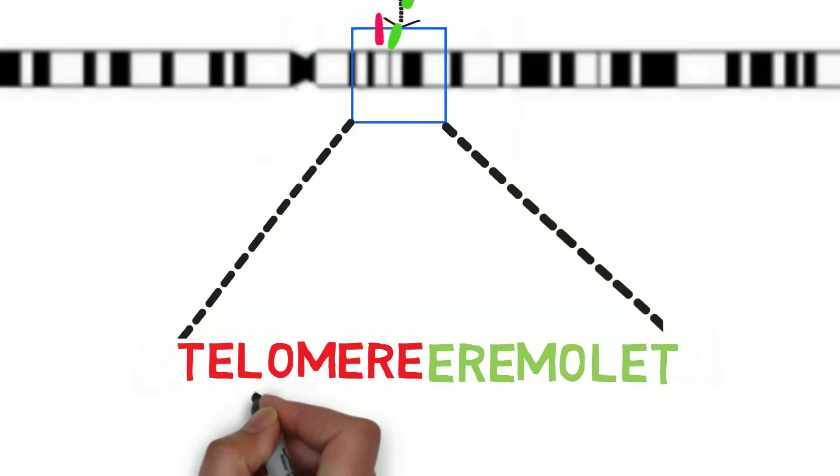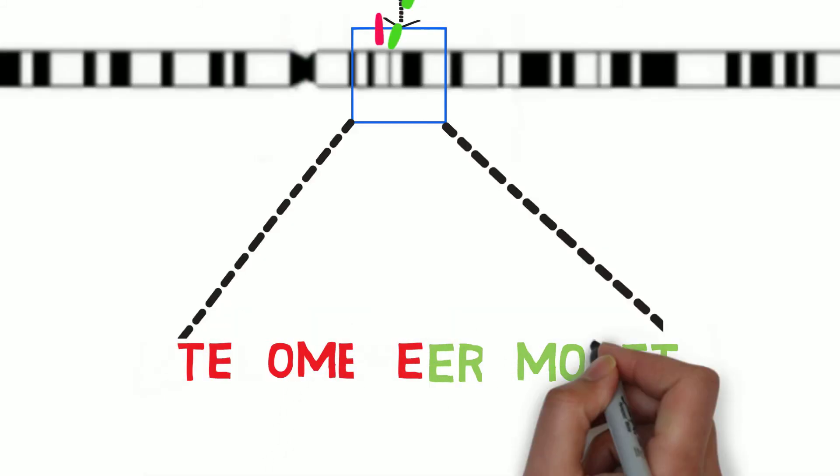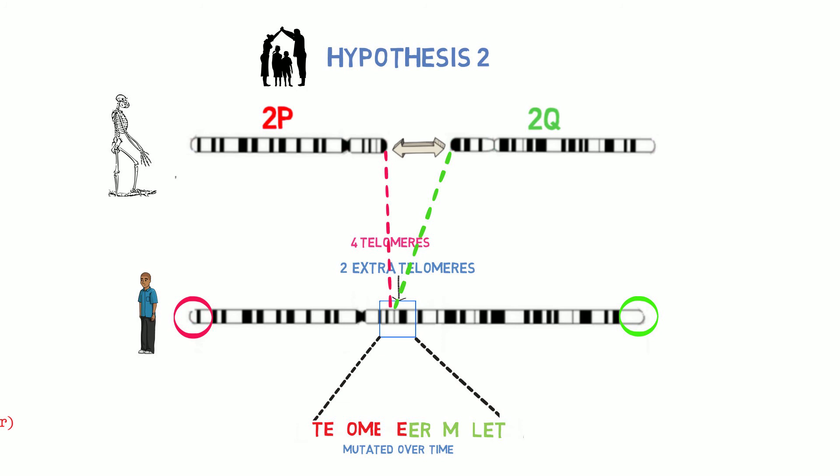Furthermore, hypothesis number two predicts since the telomeres aren't needed anymore, they would have accumulated some changes. Mutations occur over time, and in this case, the mutations would be tolerated since the code isn't needed when it's internal.